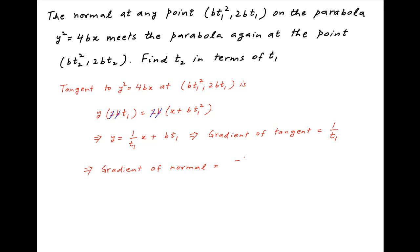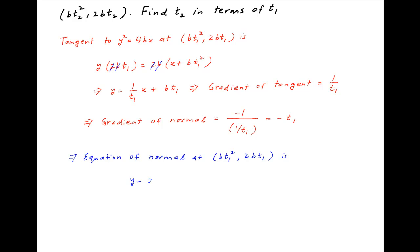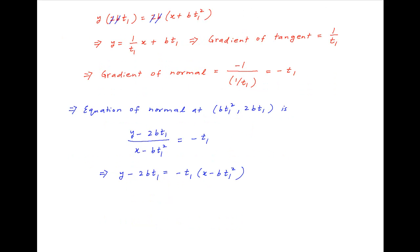The gradient of the normal will therefore be −1/(1/t₁) = −t₁. Therefore the equation of the normal at the point (bt₁², 2bt₁) can be written as (y − 2bt₁)/(x − bt₁²) = −t₁. Cross multiplying, we get y − 2bt₁ = −t₁(x − bt₁²).